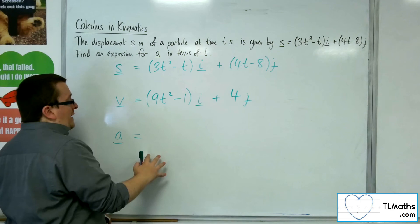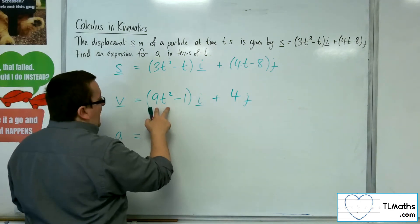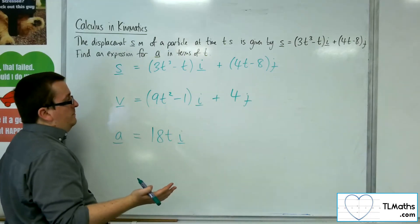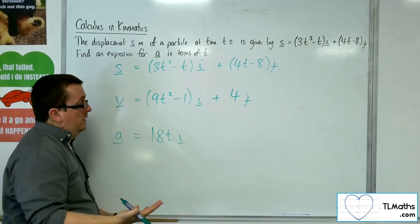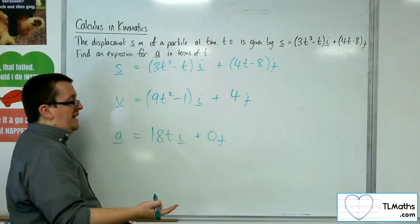Then I need to differentiate again to get to the acceleration. So I'm going to get 18ti, because the minus 1 differentiates to 0, and 4 will just differentiate to 0. So I've got plus 0j, or just the 18ti.